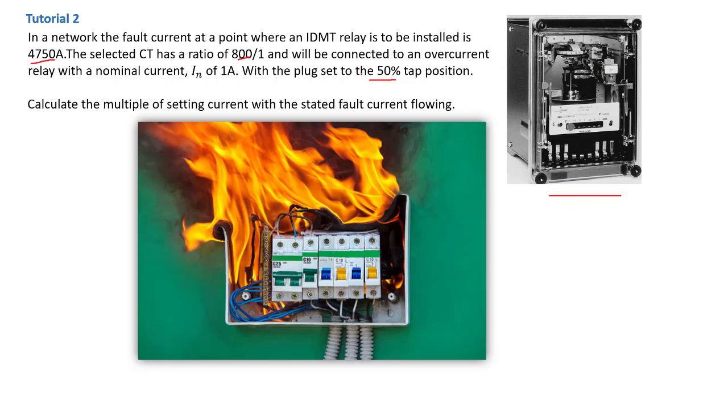We have a 50% tap setting. As you can see on your screen here, this particular IDMT relay has the tapping set at 0.5, which is 50%. The previous tutorial, it was set at 1.2, which was 125%. Now we're going to proceed and find the multiple of setting current for this particular set of values.